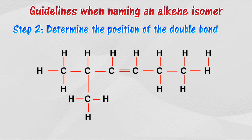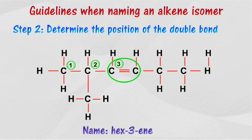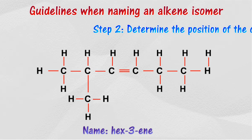Step 2: Determine the position of the double bond. Use the smallest number to indicate the position of the carbon atom where the double bond begins. In this case, the double bond position is at 3.